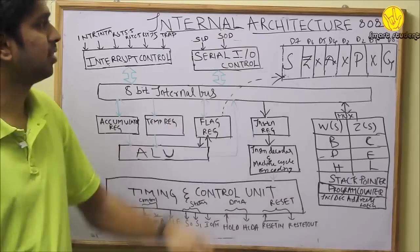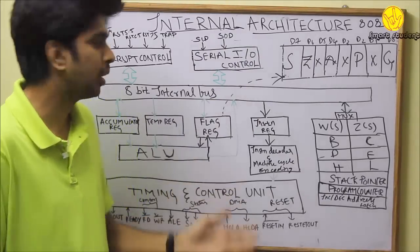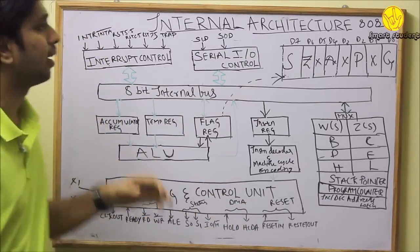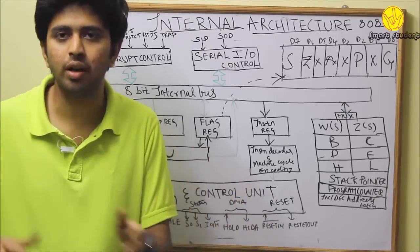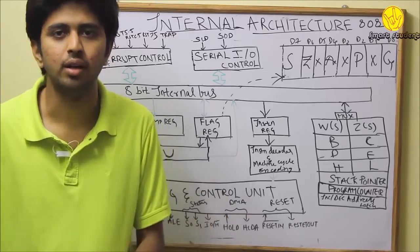Interrupt control is the last section of internal architecture of 8085 microprocessor. Interrupt control consists of INTR, which is a general purpose request to the microprocessor and based on the priority it executes. INTA is an interrupt acknowledgement.